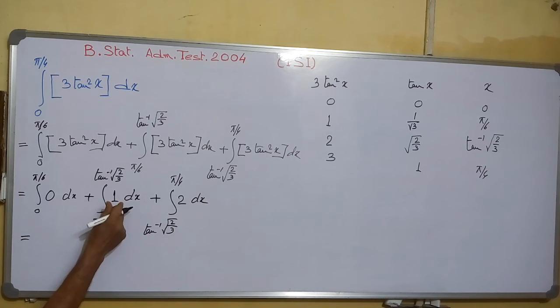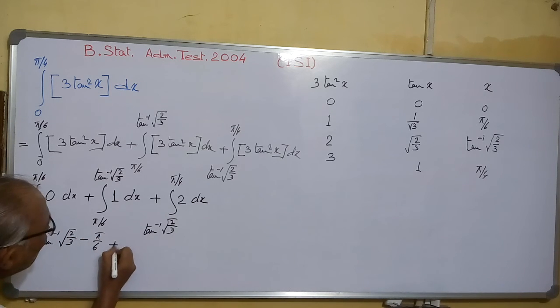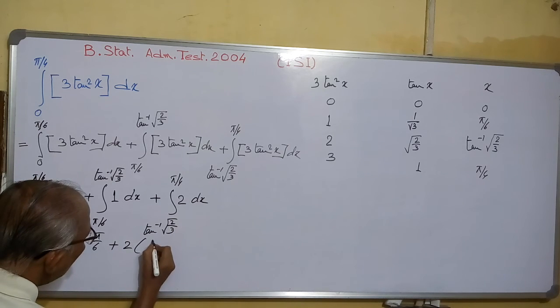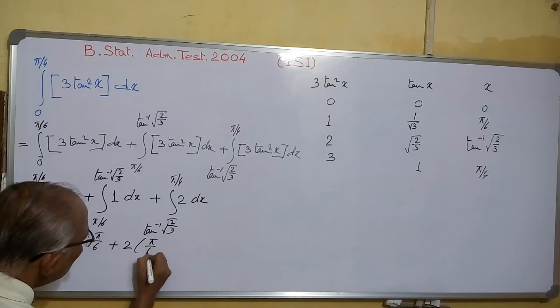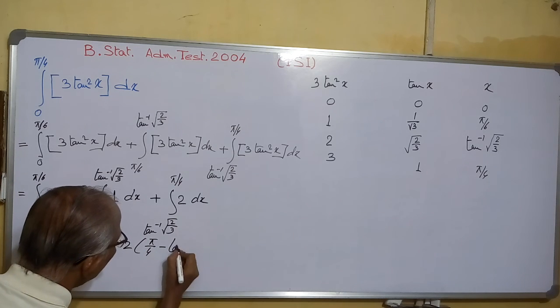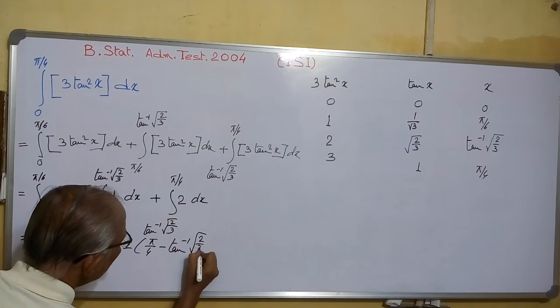x, and here plus 2 into π/4 minus tan⁻¹(√(2/3)).